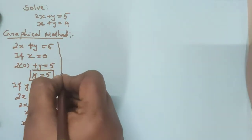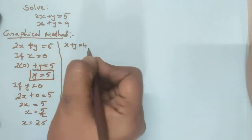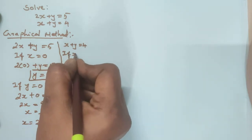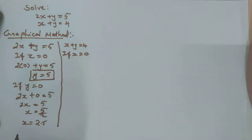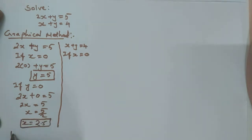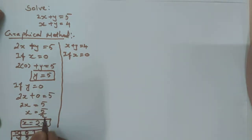Take the second equation. The second equation is x plus y is equal to 4. First assume x is equal to 0. We will be finding only 2 coordinates. Write down x and y. If x is equal to 0, the y answer is 5. If y is equal to 0, the x answer is 2.5.